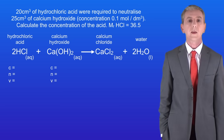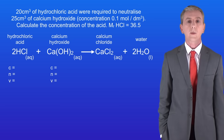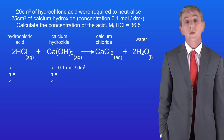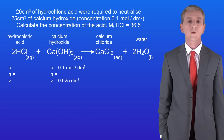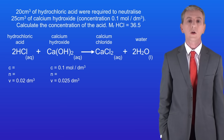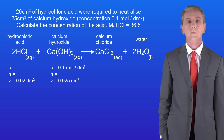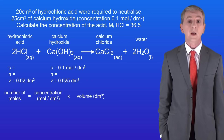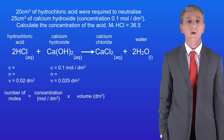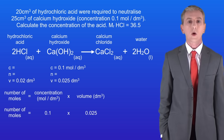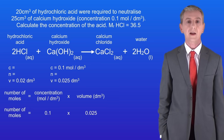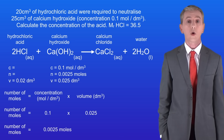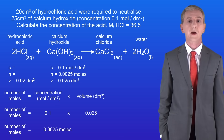Now we fill in the information. The concentration of the calcium hydroxide is 0.1 moles per decimetre cubed and the volume is 0.025 decimetres cubed. The volume of the hydrochloric acid is 0.02 decimetres cubed. Now we can calculate the number of moles of the calcium hydroxide by multiplying the concentration by the volume: 0.1 × 0.025 = 0.0025 moles of calcium hydroxide.